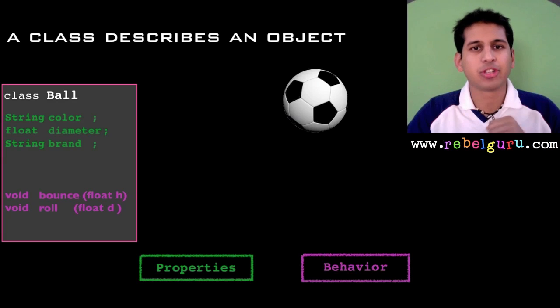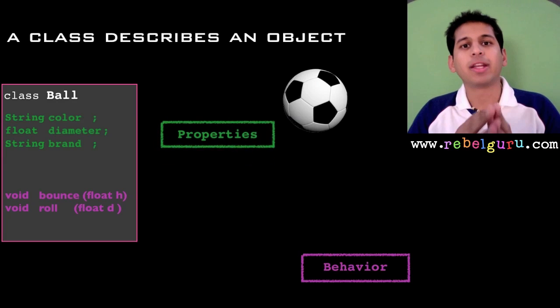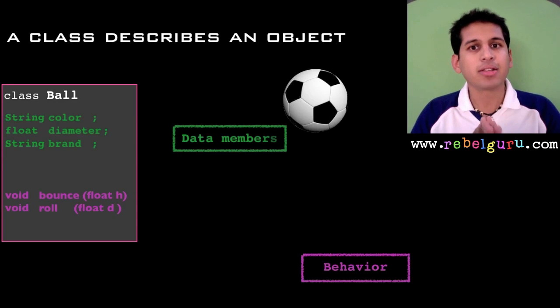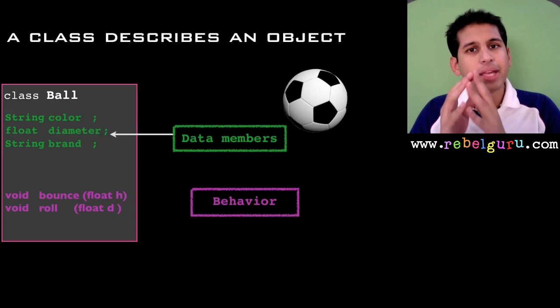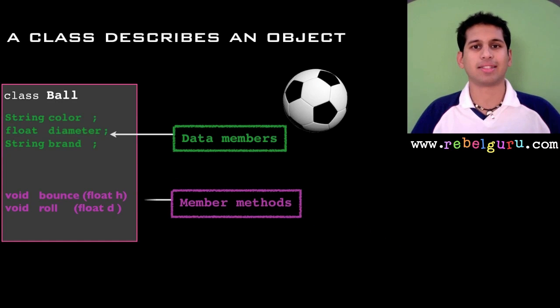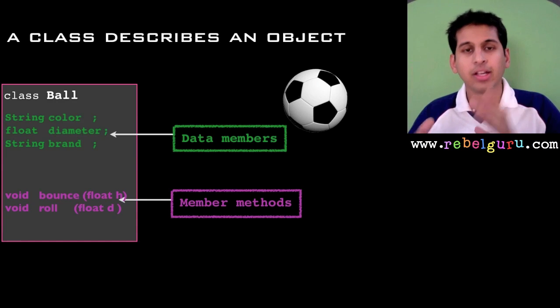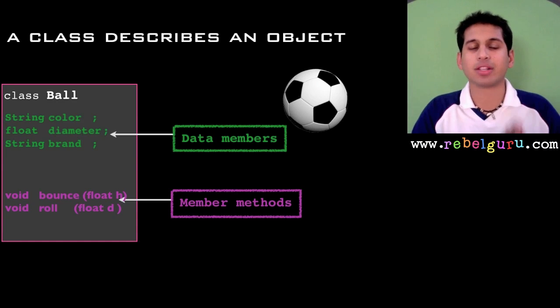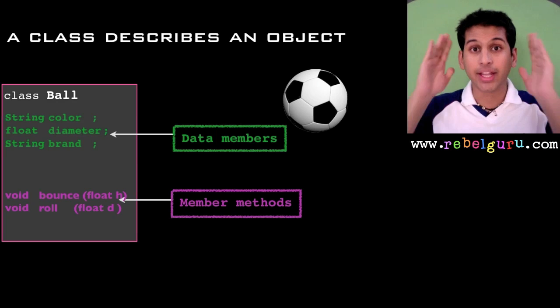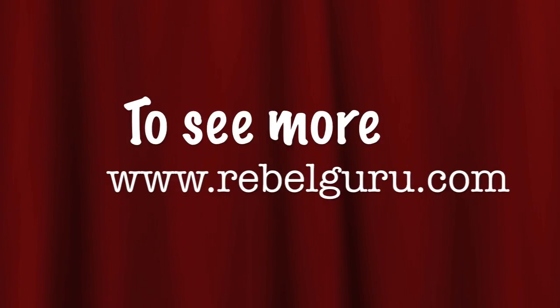This is how you translate behavior in Java into methods. In the language of Java, technically properties are called the data members of a class, and behavior is called the member methods of a class. With that, we have just translated a simple English description of a ball object into a Java description of the same object, and we have taken a big step forward in our object-oriented thinking.